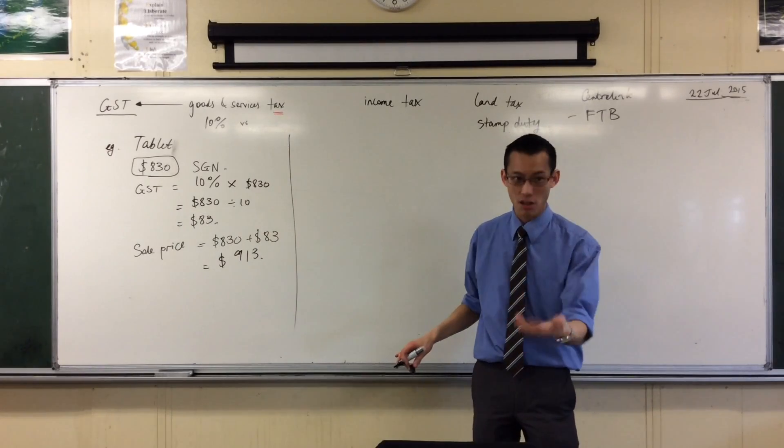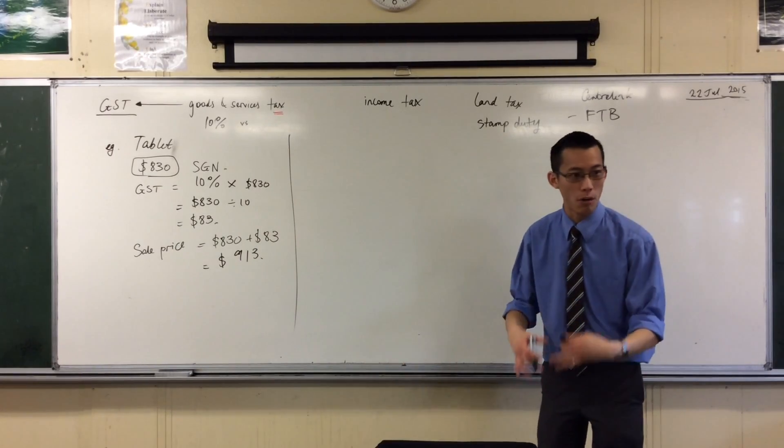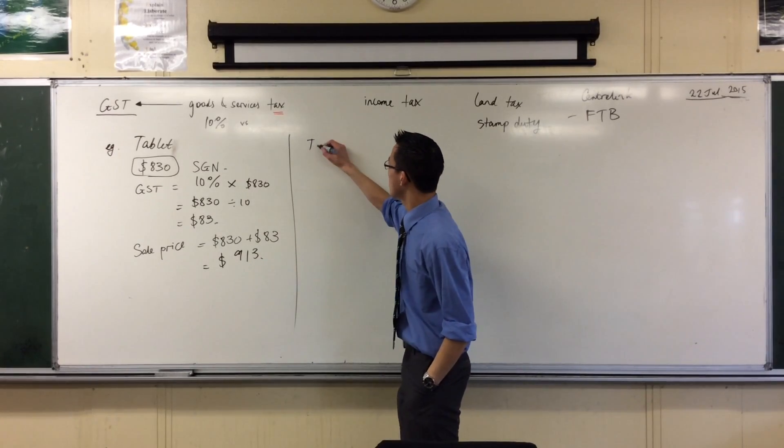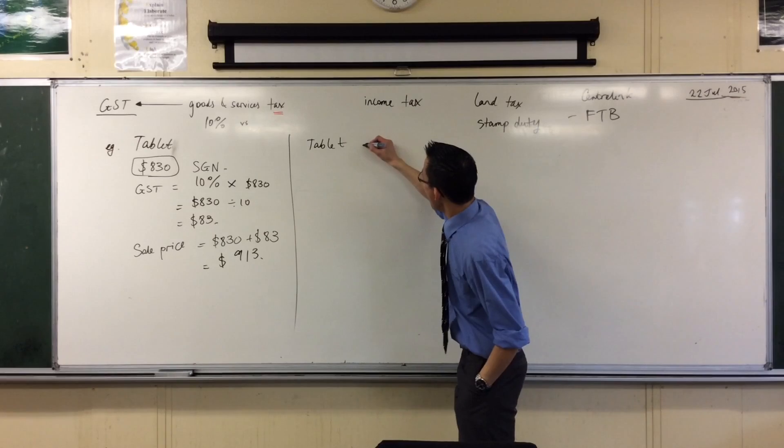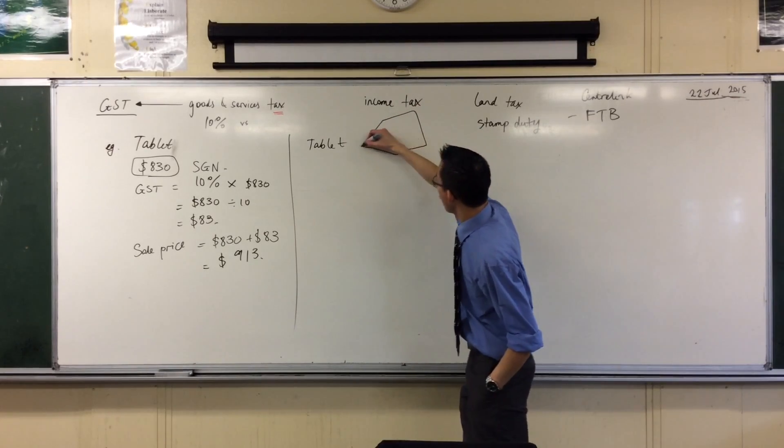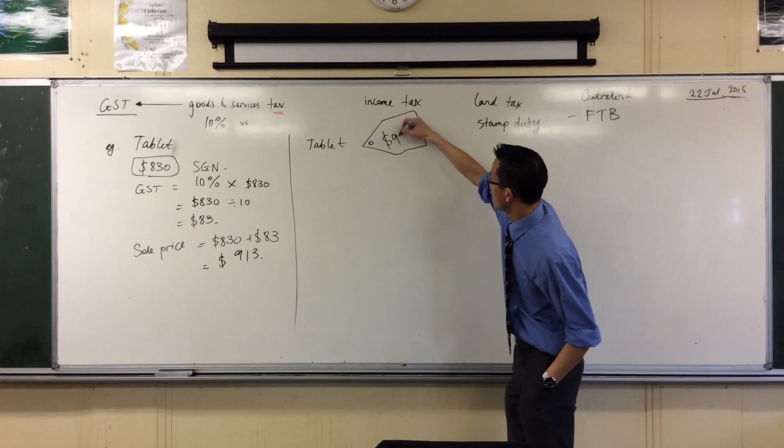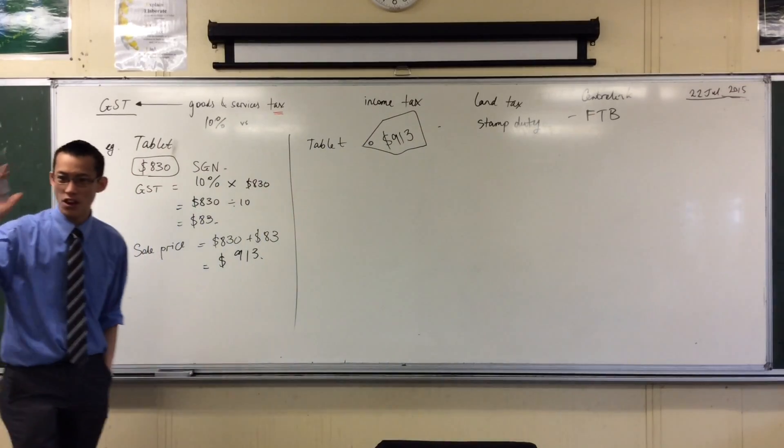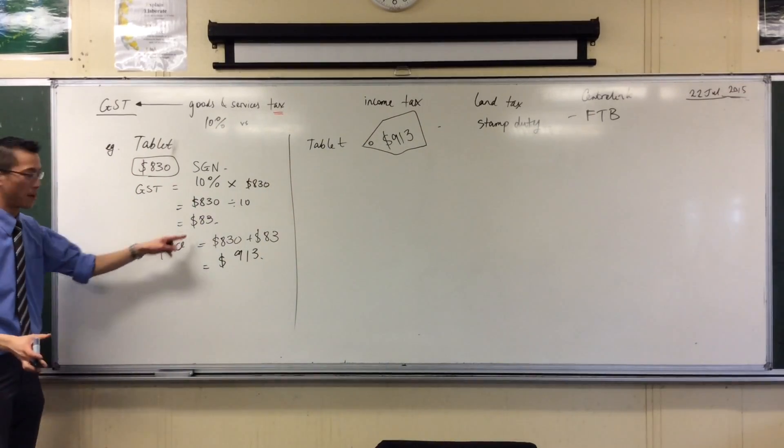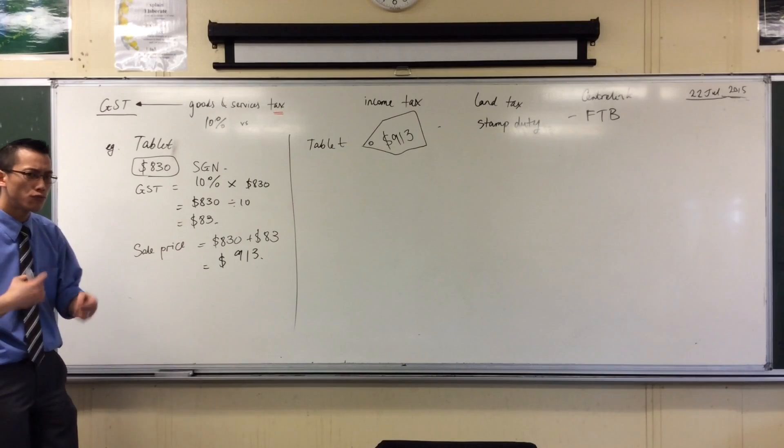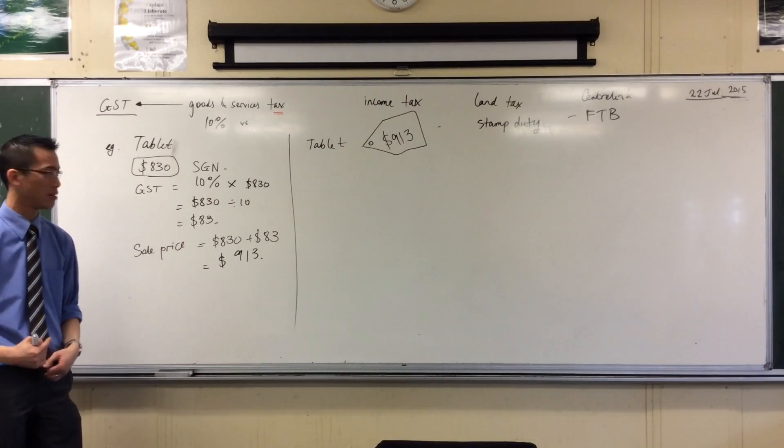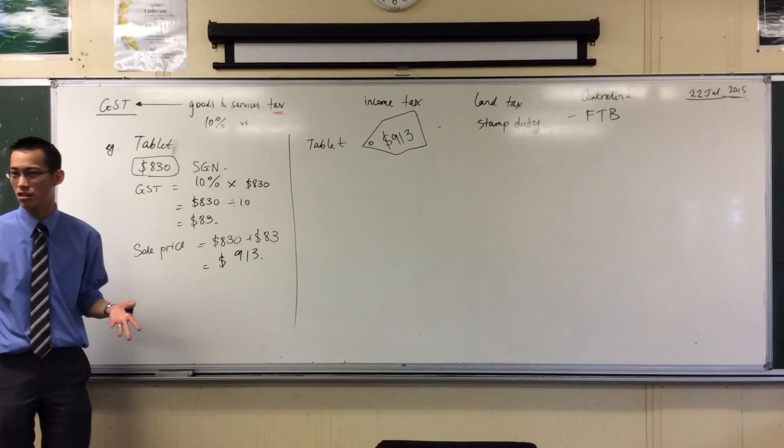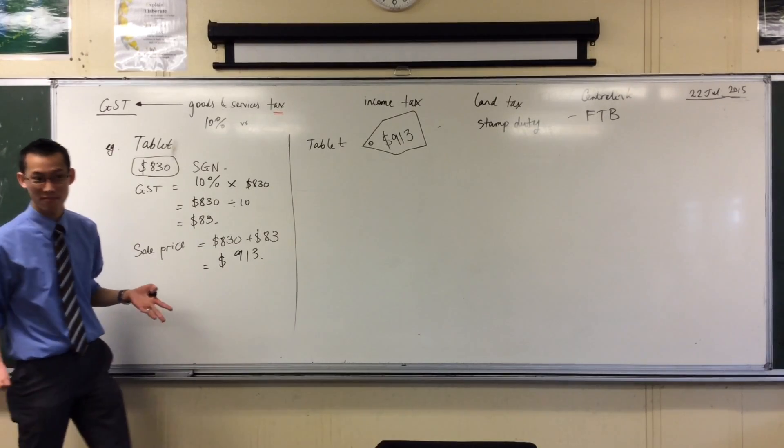So what if you wanted to know how much the GST of an object were? So we've got this situation here. Suppose the tablet has a price tag on it that says... So we already know, because we just worked it out, we know the answer we expect, how much the GST is. But how do you reverse-engineer this to go backwards through this situation? Someone want to give me a suggestion? Someone hasn't said anything yet?